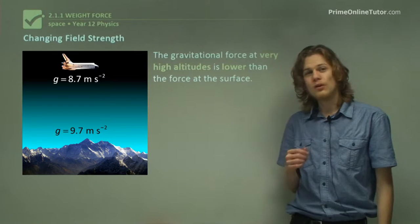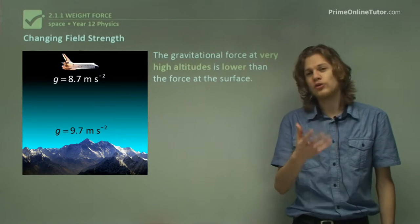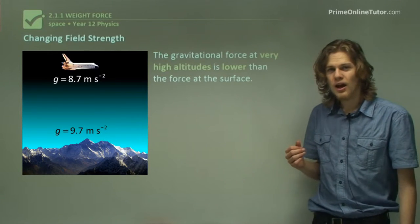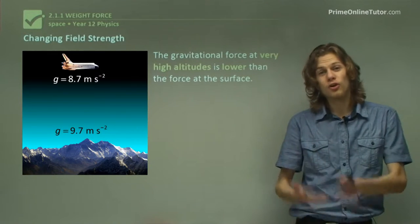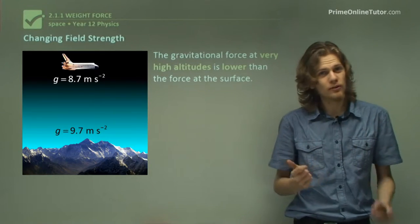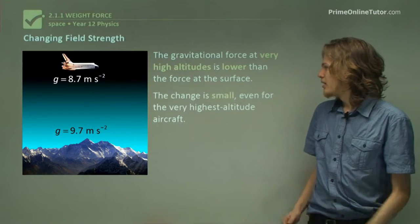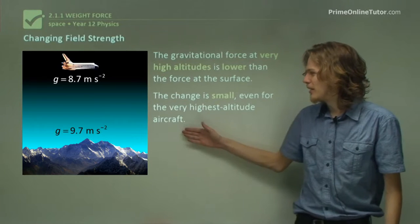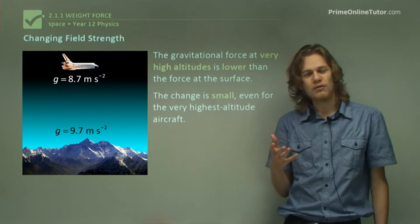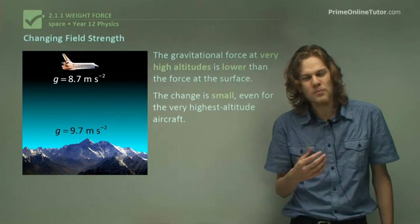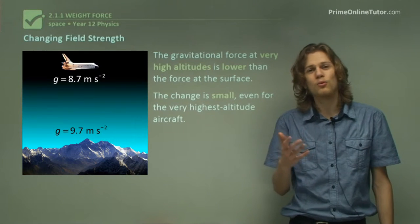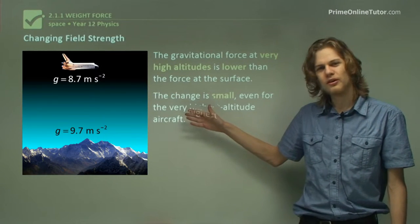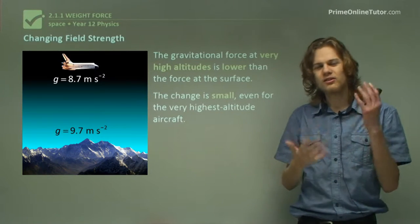Turns out that the gravitational field at very high altitudes, like at the very top of mountains, tends to be lower than the force at the surface. And this is because the further out you go from Earth, the less of a gravitational field there is. But it turns out the change is very, very small. We have here Mount Everest. The gravity at the top of Mount Everest is about 9.7 meters per second squared, instead of the 9.8 we're used to. So it's very, very difficult to measure that tiny little change.